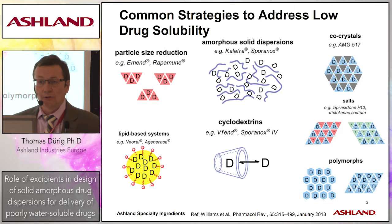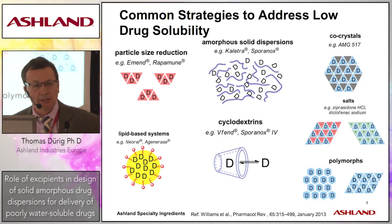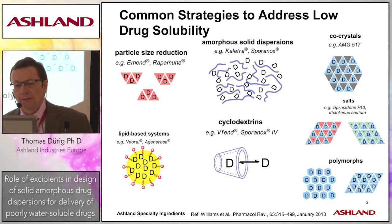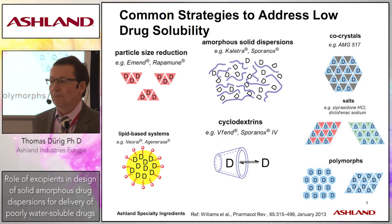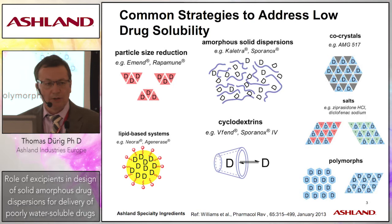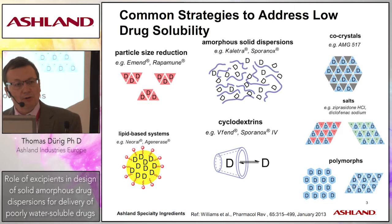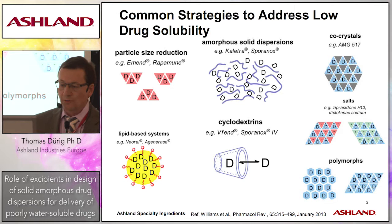One can also formulate co-crystals, where you form a co-crystal between a drug and another ingredient. Lipid-based systems, emulsions, and nano-emulsions are another solution for poorly soluble, oil-soluble compounds. Cyclodextrins and other complexes — where we form a complex between a drug and an excipient or polymeric carrier — are another option. One can also look at modifying solubility through salt selection and selecting specific crystal forms, such as polymorphism.